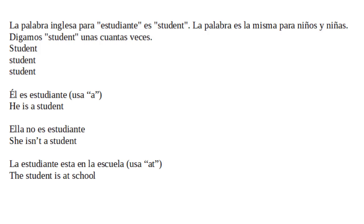La palabra inglesa para estudiante es 'student'. La palabra es la misma para niños y niñas. Digamos 'student' unas cuantas veces: student, student, student. El es estudiante. Usa 'a'. He is a student. Ella no es estudiante. La estudiante está en la escuela. Usa 'at'. The student is at school.